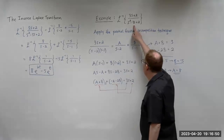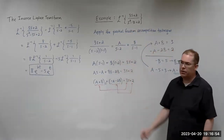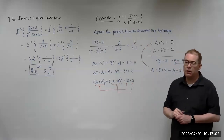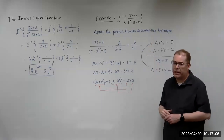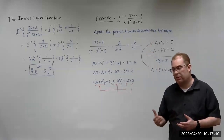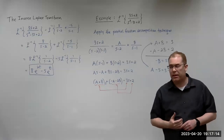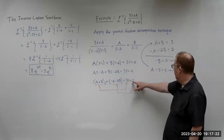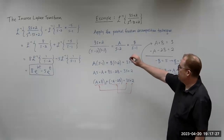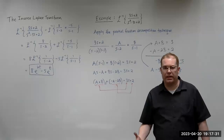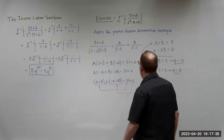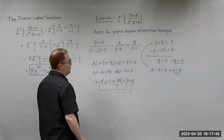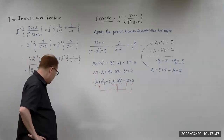So we have something factorable on the bottom with distinct linear factors. You may want to brush up on partial fraction decomposition — it's covered in pre-calculus and Calculus 2. There's also a shortcut: you can let S equal the root of each factor to solve for A and B directly. For example, let S equal 1: this makes the S minus 1 factor zero, and plugging in gives B equals minus 5. Let S equal 2: this makes the S minus 2 factor zero, giving A equals 8.